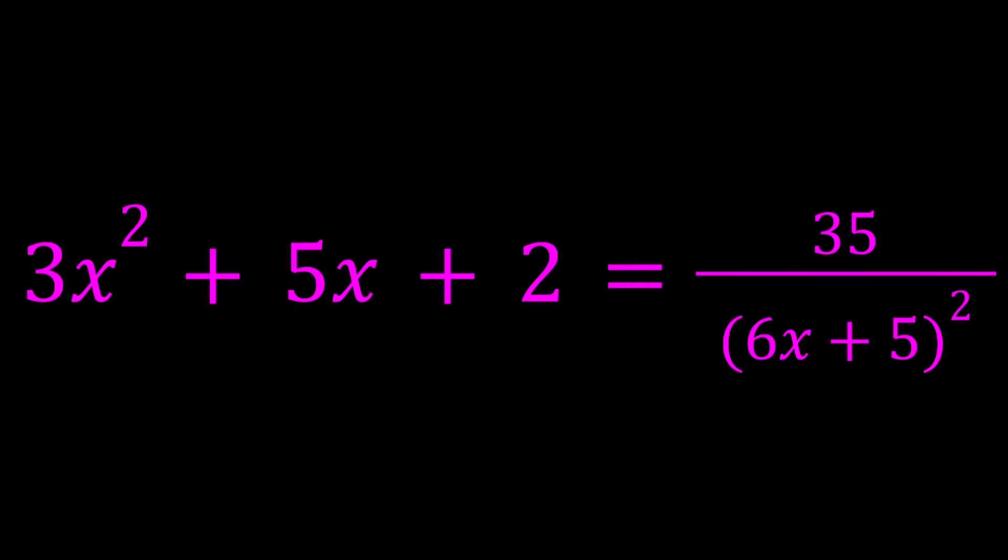Hello everyone. In this video, we're going to be solving a rational equation. We have 3x² + 5x + 2 = 35/(6x + 5)². So we're going to be finding the x values, real and complex, all the solutions.